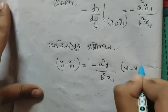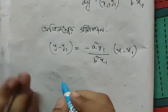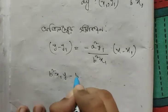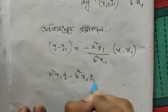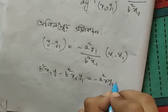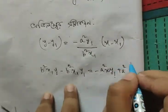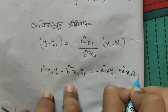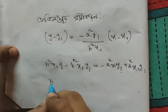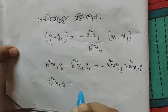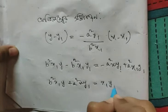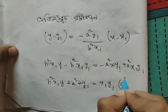Into x minus x₁ — cross multiplication করো. b² x₁ y minus b² x₁ y₁ equals to minus a² x₁ plus a² x₁ y₁. And the x side: b² x₁ y plus a² x y₁ equals to x₁ y₁ and a² plus b².